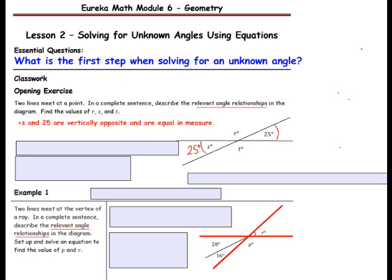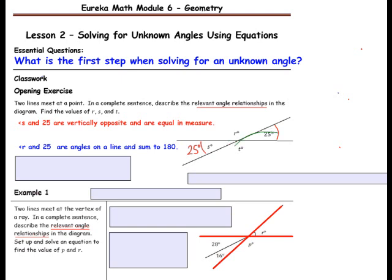Next, let's take a look at angle R. Angle R and 25 degrees are angles on a line and sum to 180 degrees, so we can write an equation to find the measure of angle R. We have 25 plus R equals 180. Here is the line and here are the two angles that equal 180 degrees. Subtract 25 from both sides of the equation, leaving you with R equals 155 degrees.